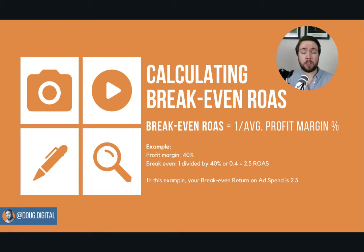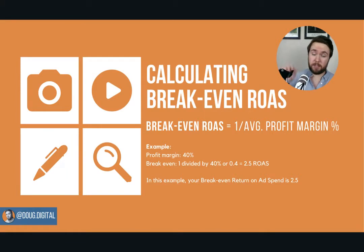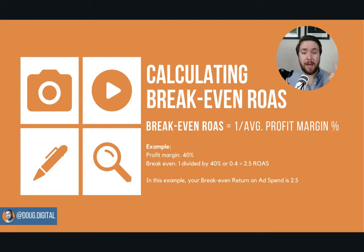The break-even point means that you spend £100 and you make £100. So you have lost zero, but you've also gained zero. That is your break-even situation. There's a really simple calculation and it is here below on this screen.